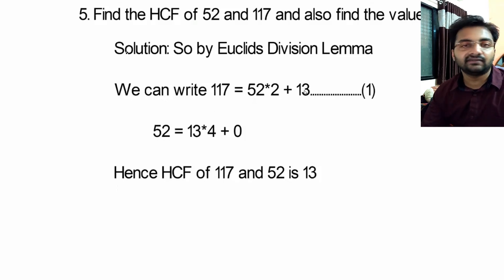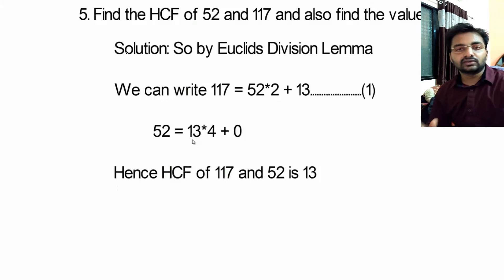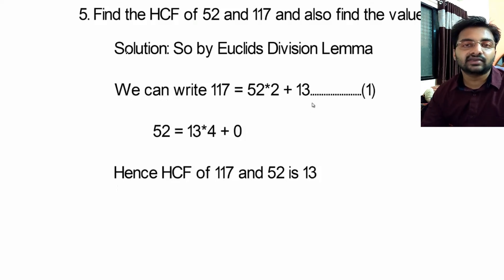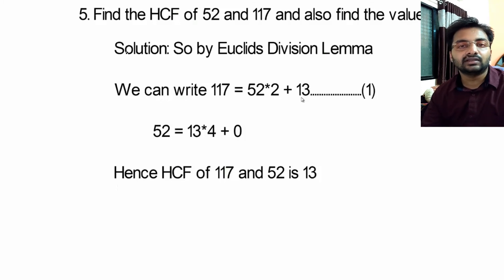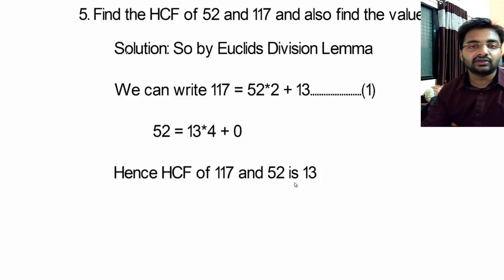For the second equation, 52 becomes the dividend and 13 becomes the divisor. So 52 = 13 × 4 + 0. The remainder here is 0. Since the remainder is 0, according to Euclid's Division Lemma, the HCF is the divisor of the last equation — which is 13. Hence, the HCF of 117 and 52 is 13.